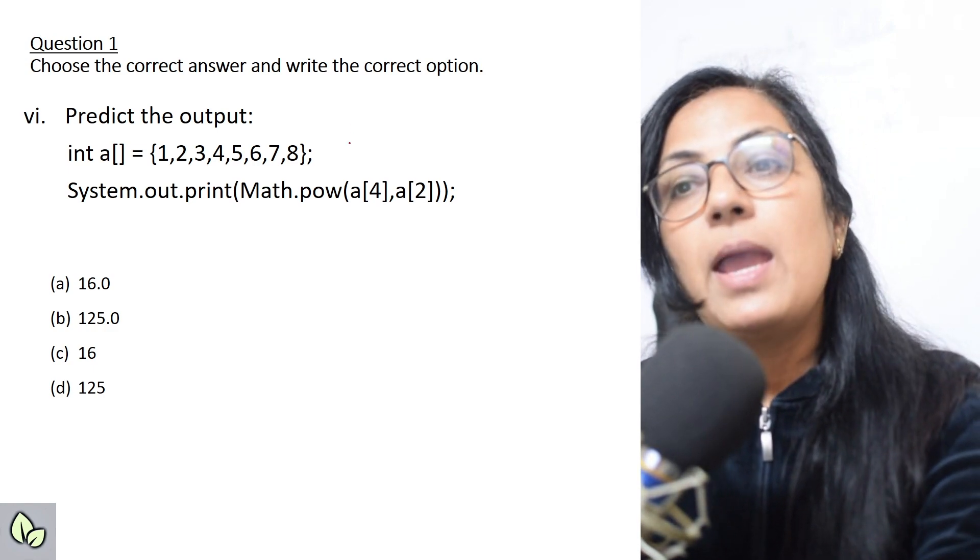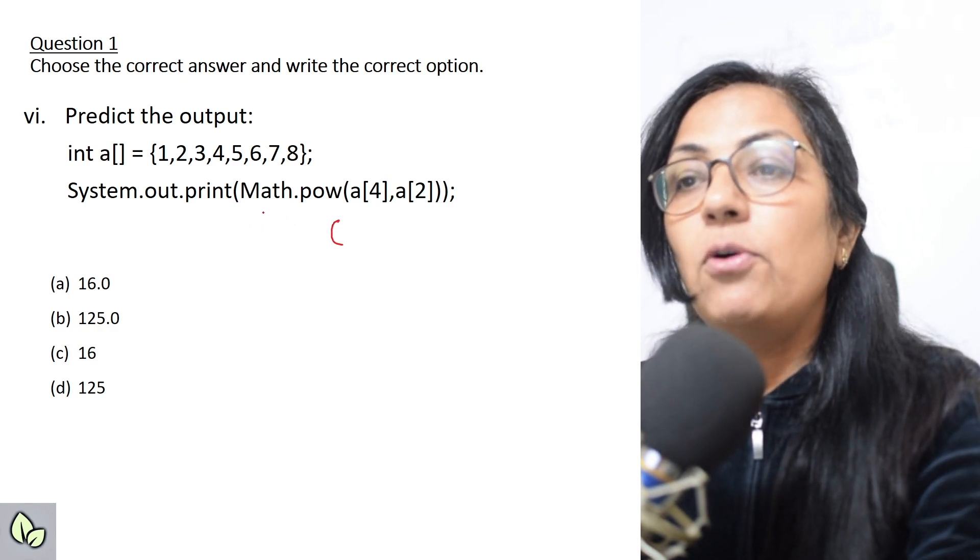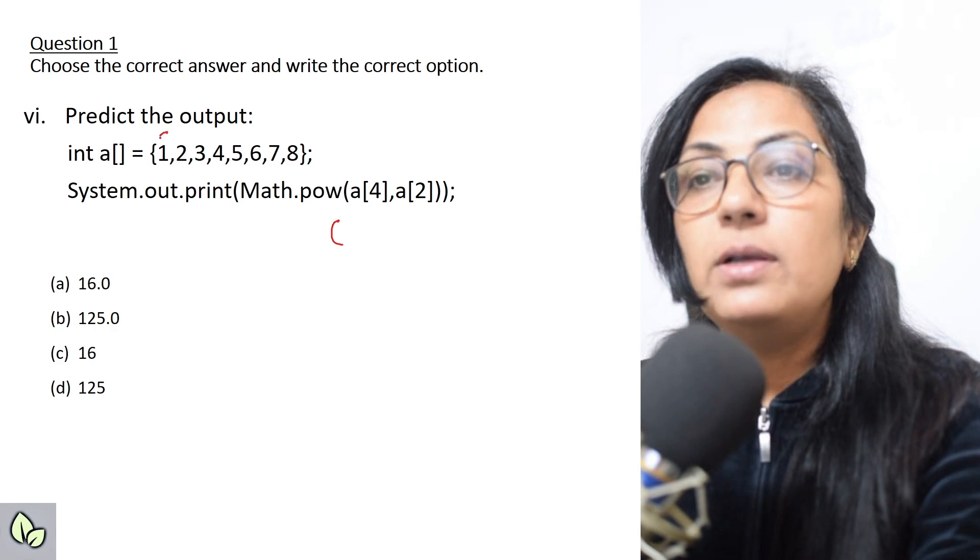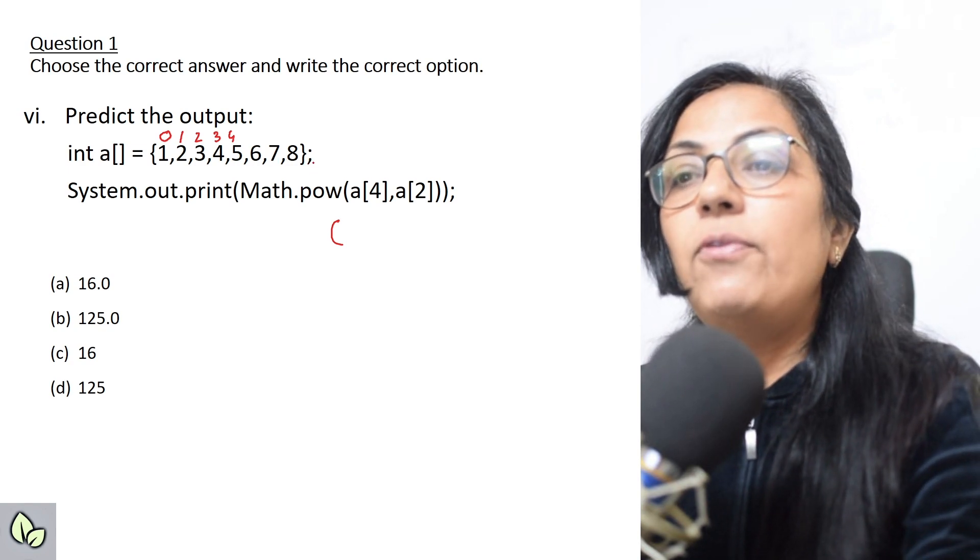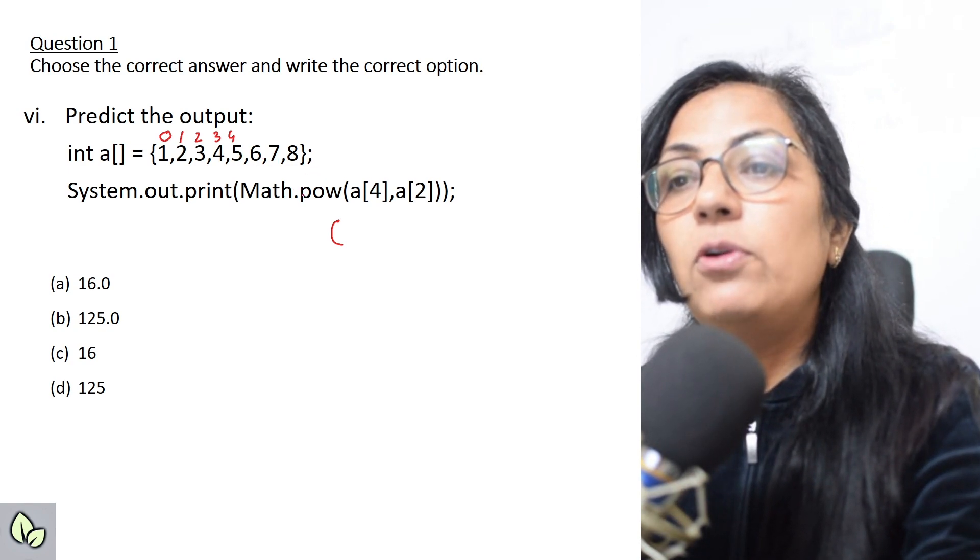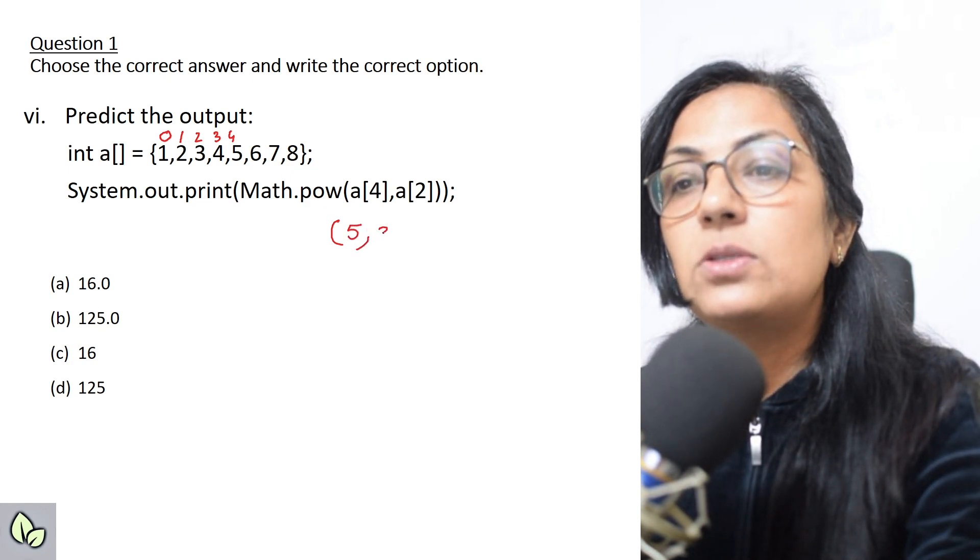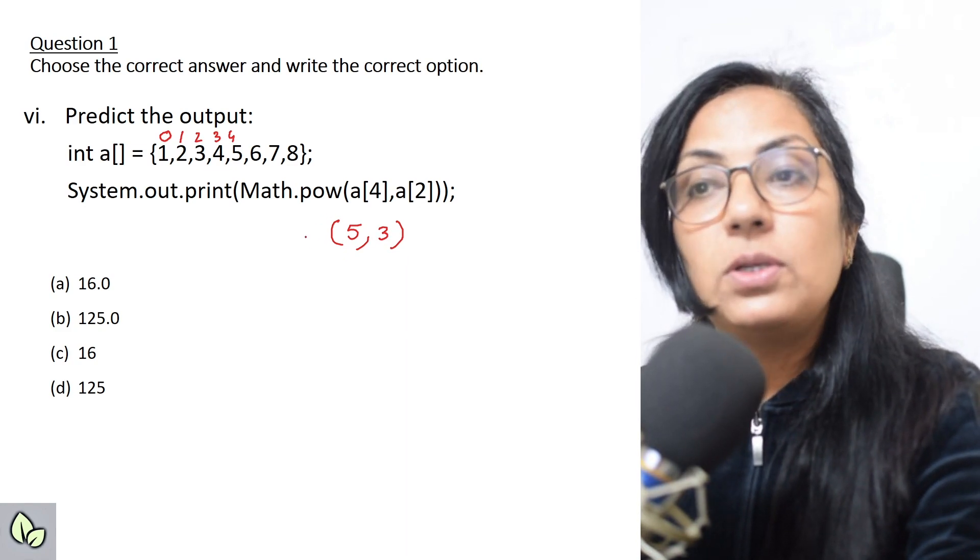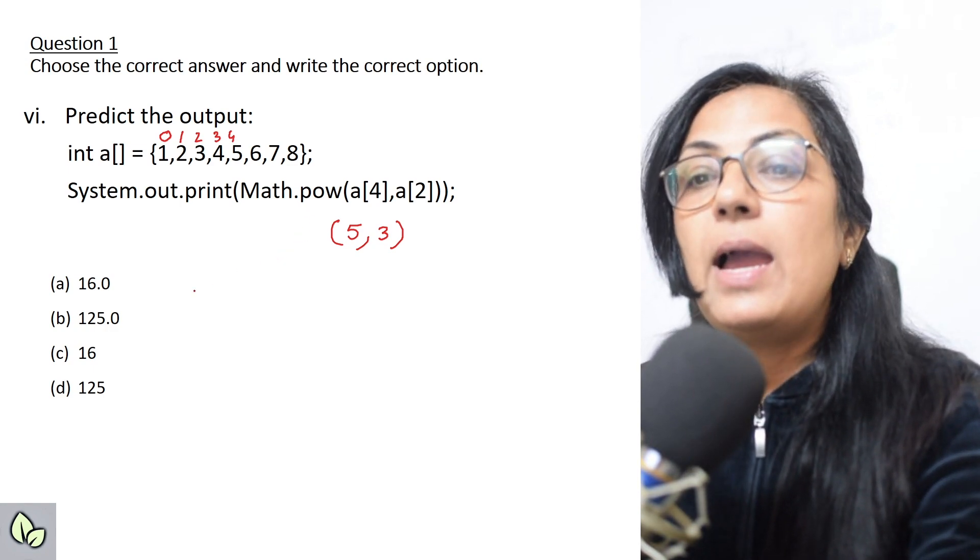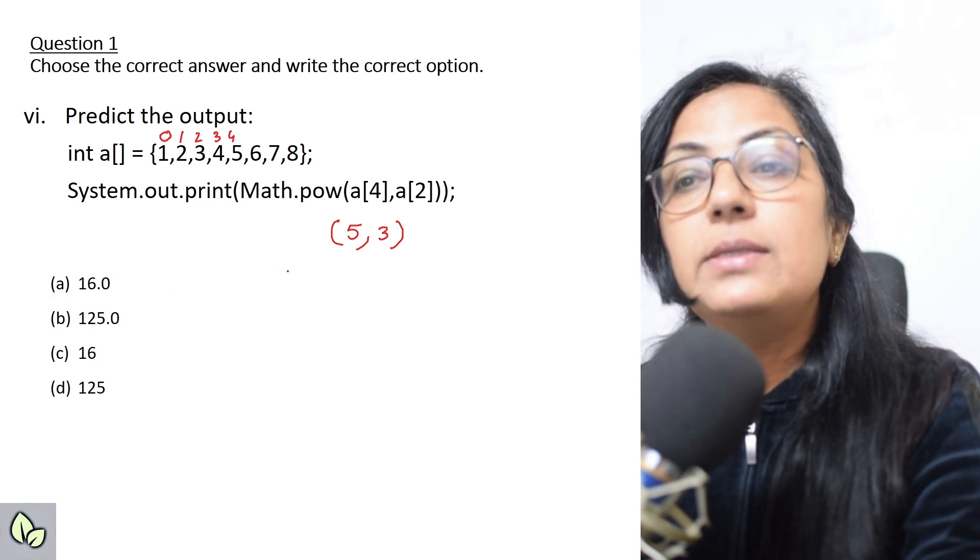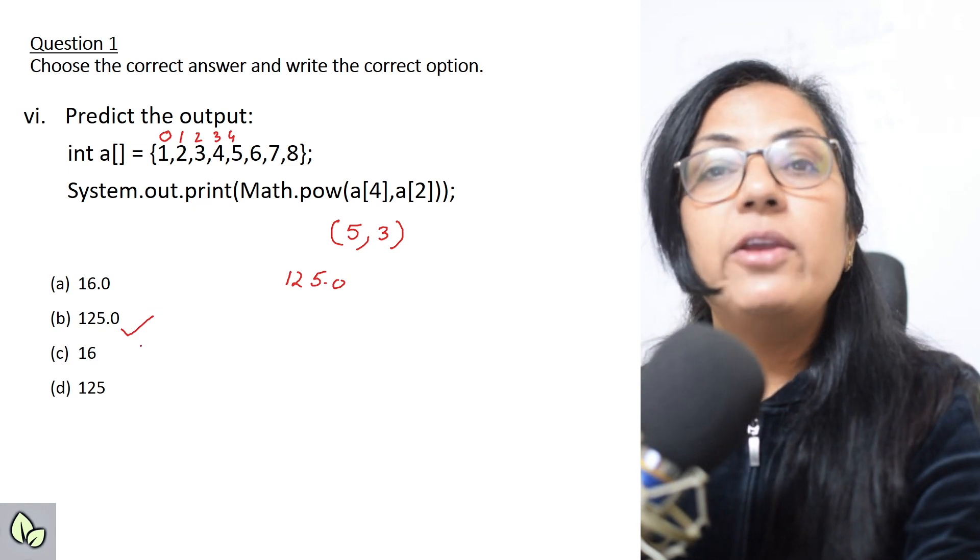The next question: predict the output. int a equals to one two three four five six seven eight, and system.out.print math.pow a[4] a[2]. All of you know that the first subscript is zero one two three four, so a[4] is five and a[2] is three. So five to the power three, math.pow gives you the power value. Five cube is 125, and math.pow function returns the answer always in double type, so the correct answer is 125.0.